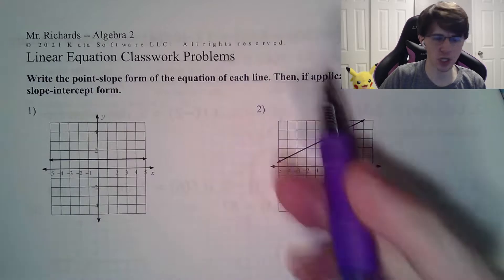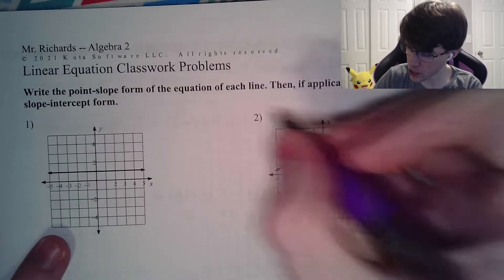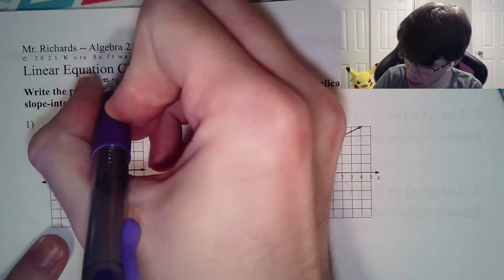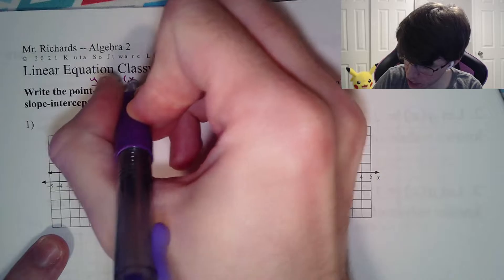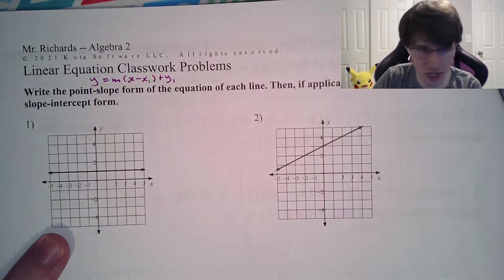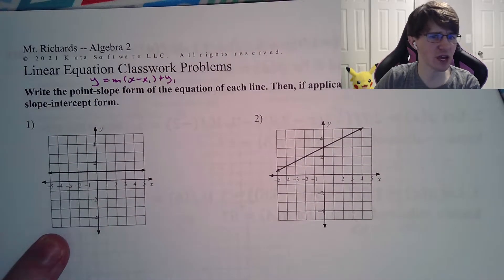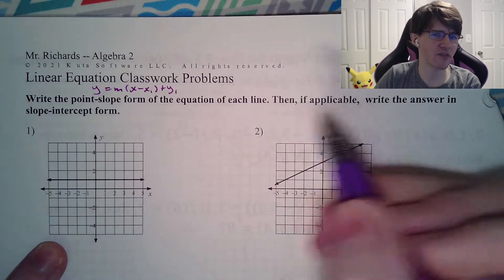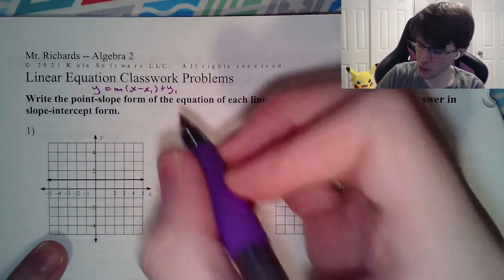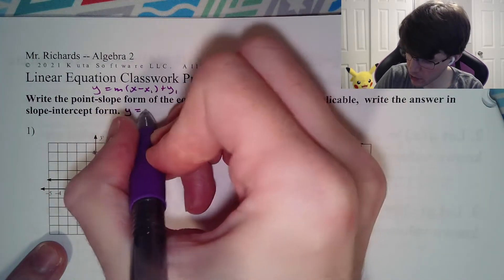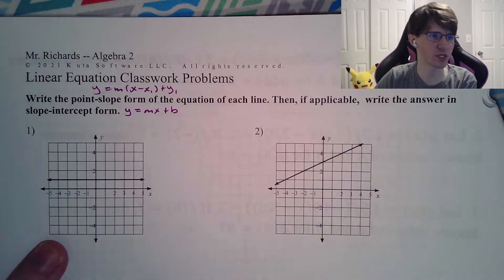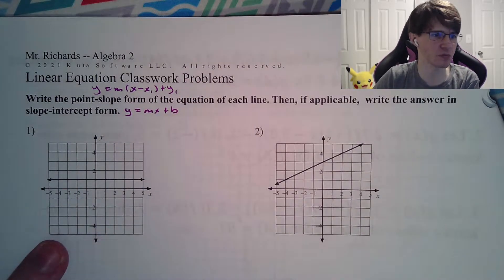Write the point-slope form of the equation of each line. Remember that point-slope is y equals m times x minus x1, plus y1. Then, if applicable, write the answer in slope-intercept form. Slope-intercept form is probably what you're used to from geometry of previous years: y equals mx plus b.